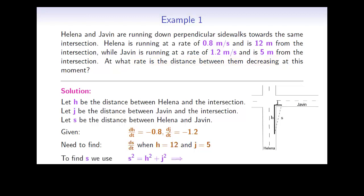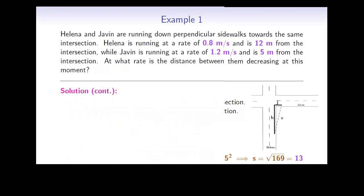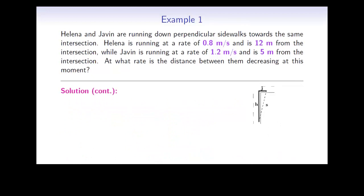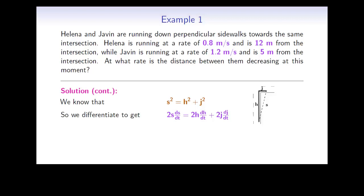To find the S that corresponds to H equals 12 and J equals 5, we use S squared is equal to H squared plus J squared. This comes because in the diagram we see a right triangle and we use Pythagoras' theorem. Subbing in H equals 12 and J equals 5, we can solve for S and we see that S should be the square root of 169, or equivalently 13. We now need to find the expression that relates the known and unknown quantities. We know that S squared is equal to H squared plus J squared. So we differentiate this with respect to T and get 2S dS/dt is equal to 2H dH/dt plus 2J dJ/dt.